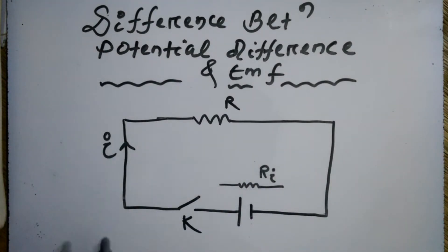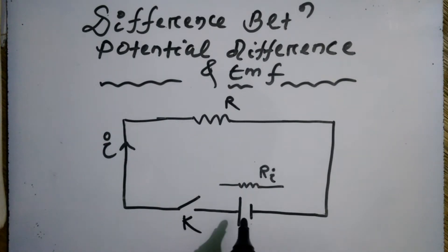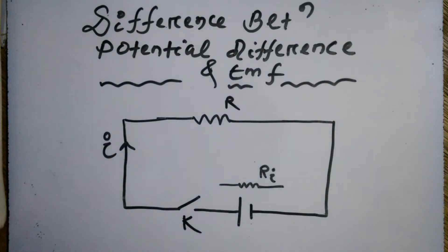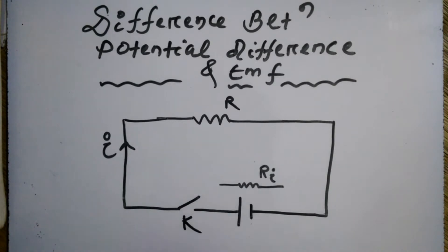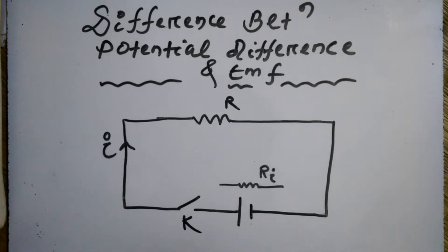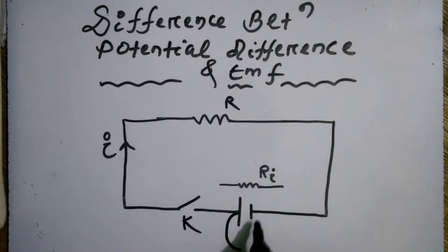Whenever the key is open, there is no flow of current in the external circuit. But when the key is closed, a current will flow through the external circuit. Now let's understand the difference between potential difference and EMF — listen carefully.